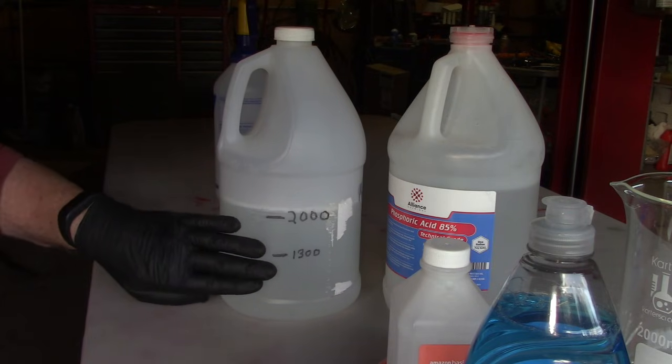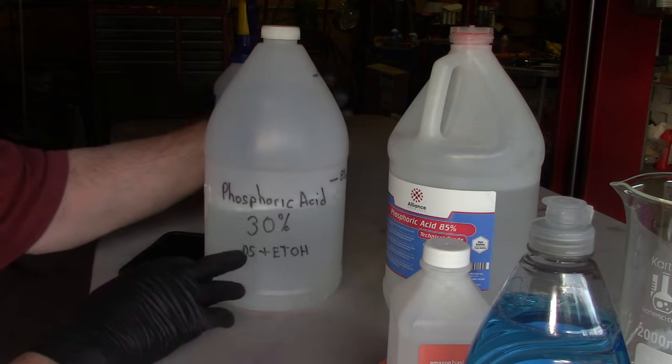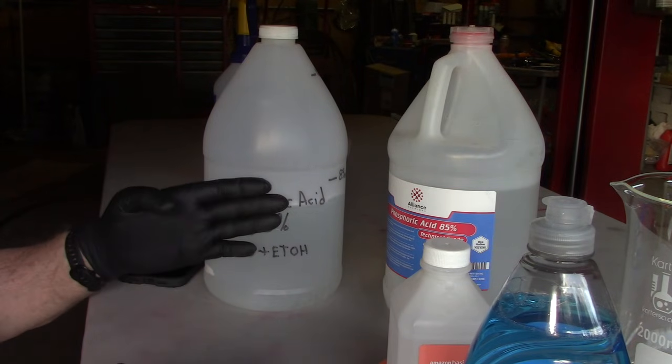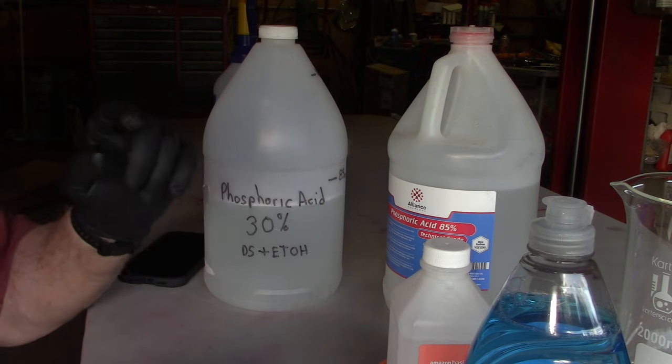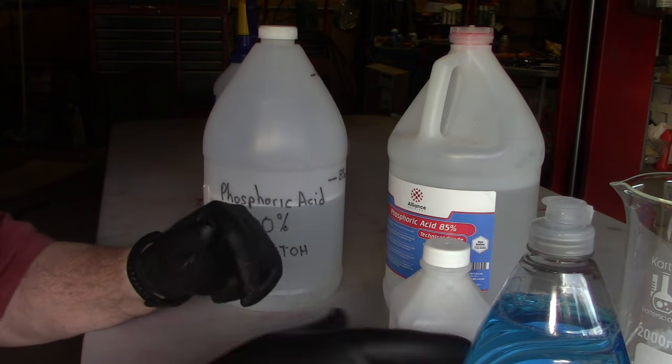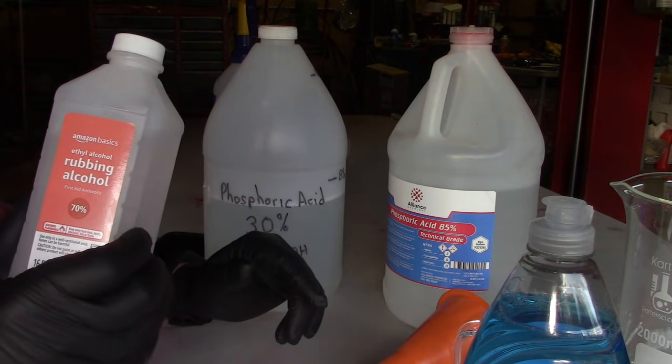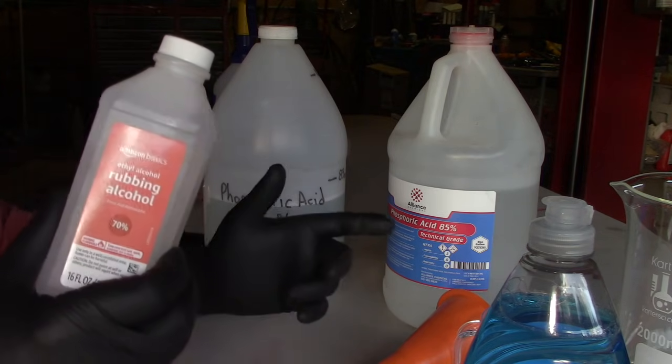So that in a nutshell is how you mix it up. However you end up with the 30%, whether you buy it at 30% or you mix it to 30%, then it's 20 parts solution to one part of the alcohol. I said methyl and ethyl alcohol are better than isopropyl, but you can use isopropyl.